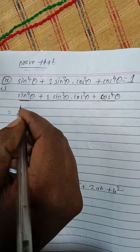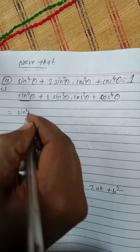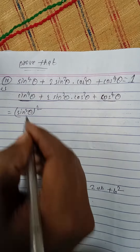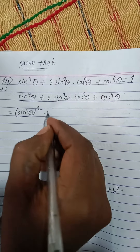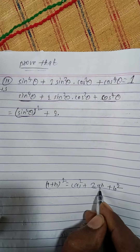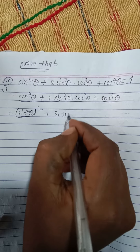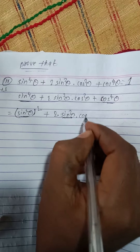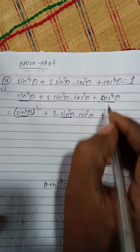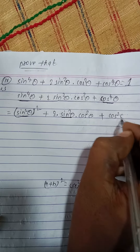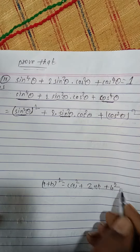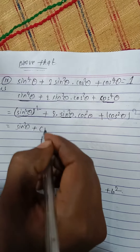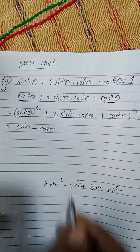We can write this as (sin²θ)², where sin²θ is 'a'. So a² = (sin²θ)², then 2ab means 2·sin²θ·cos²θ, and b² = (cos²θ)². So the whole expression equals (sin²θ + cos²θ)².